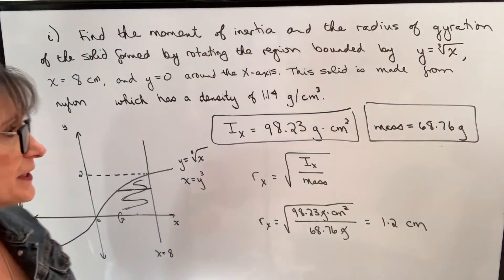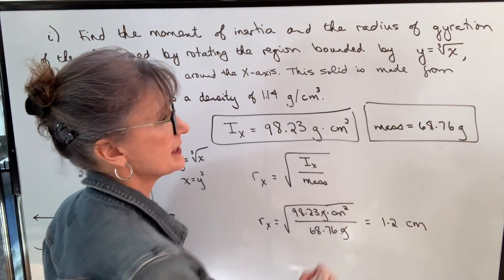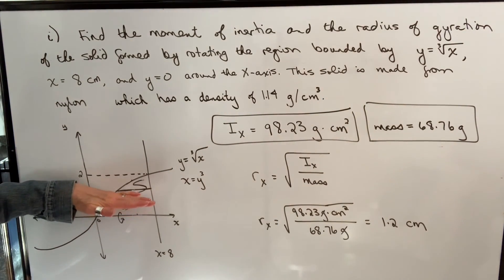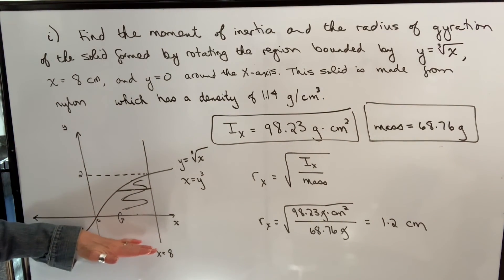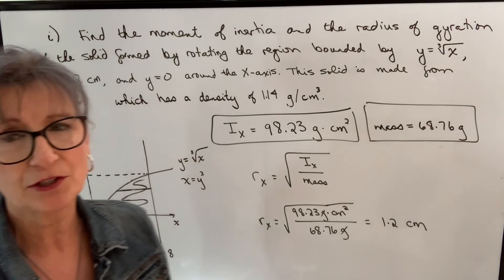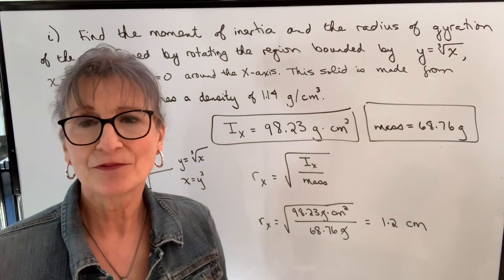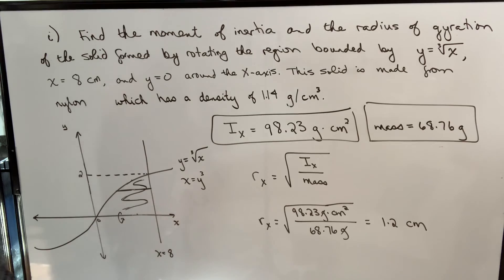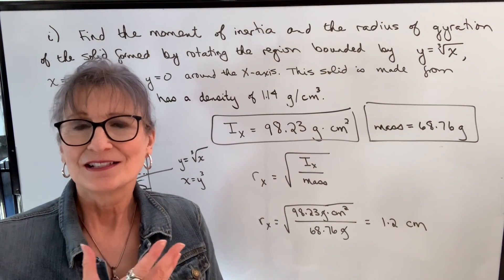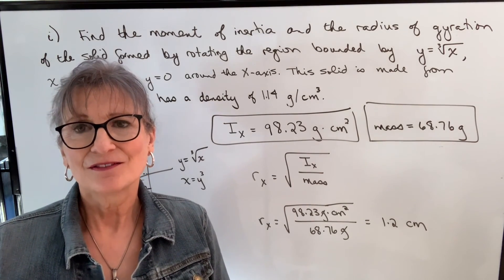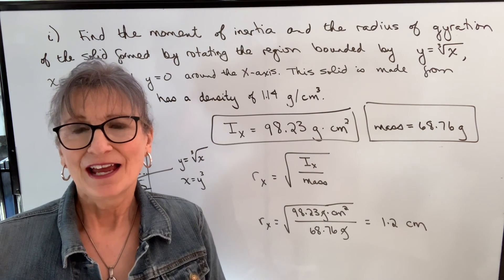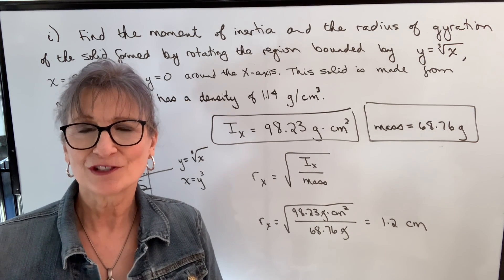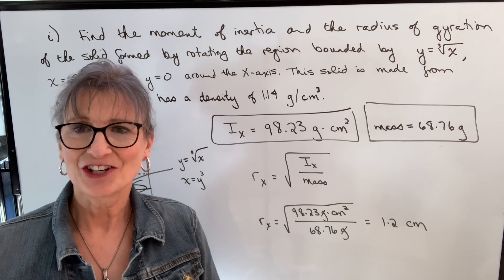What that means is if we were to take a mass of 68.76 grams and place it at y equals 1.2 centimeters or y equals negative 1.2 centimeters, it would have the same rotational inertia as this volume with respect to the x-axis. Try to get some practice doing these on your own. In the next video, I'm going to talk about some other applications of integration. Take care and see you then.